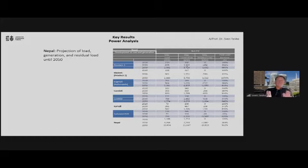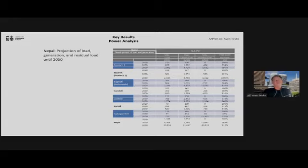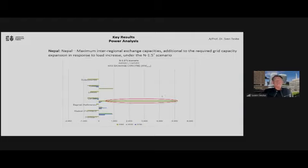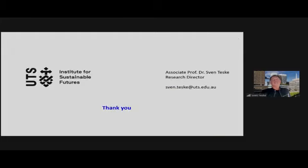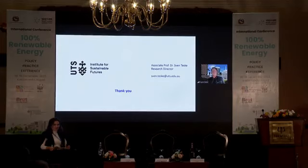The residual load — the difference between grid load and generation — indicates the extent of grid expansion and storage needs. In one province (Gandaki), there is a large spike in generation that needs to be distributed to other provinces. Sven closes by noting that more details are in the report and that he is happy to answer questions.